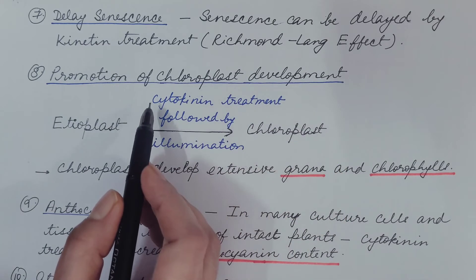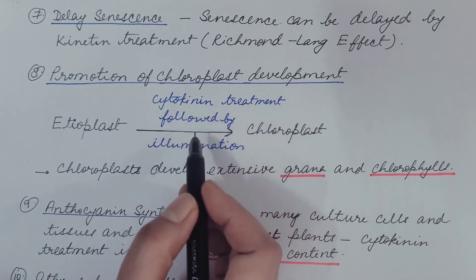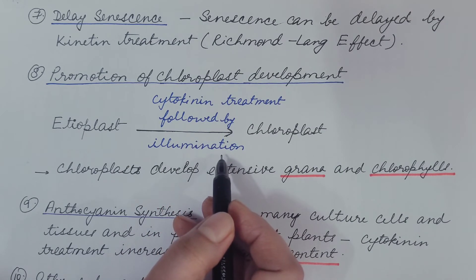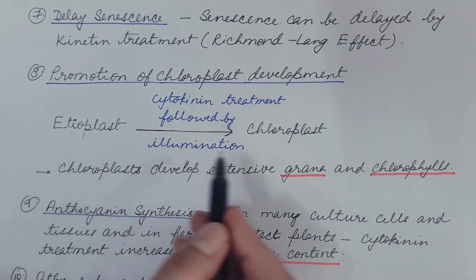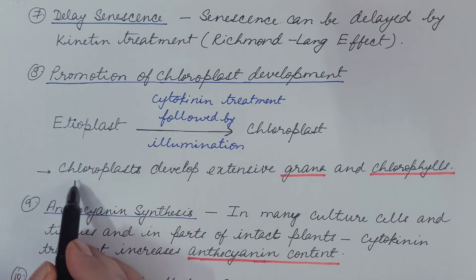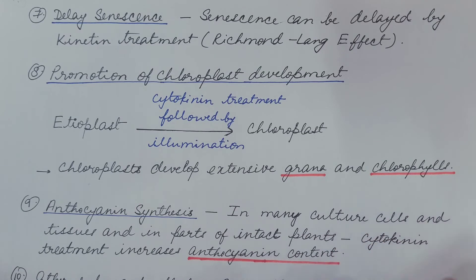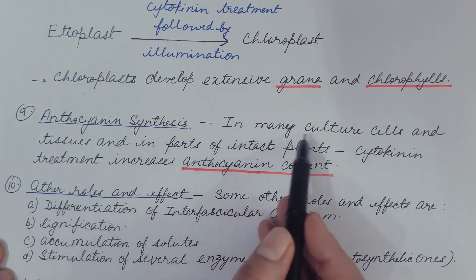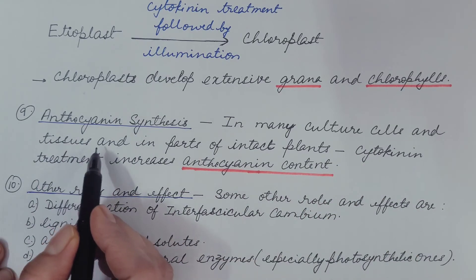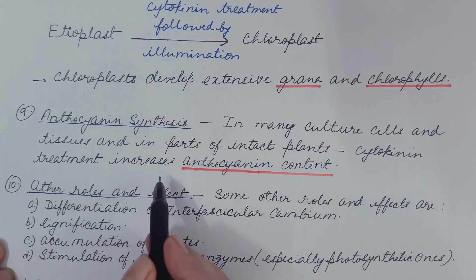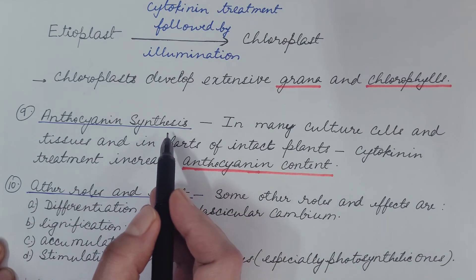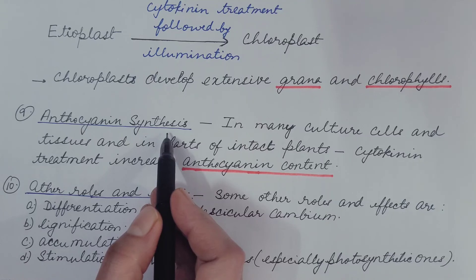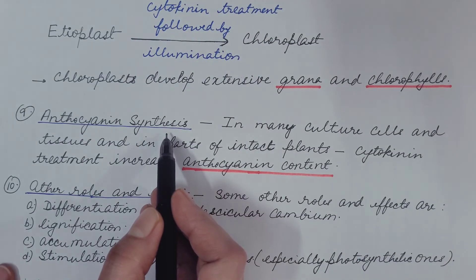Eighth is promotion of chloroplast development. When an etiolated seedling is treated with cytokinin and then exposed to illumination, it promotes the conversion of etioplasts to chloroplasts. Chloroplasts then develop extensive grana and chlorophylls. Ninth is anthocyanin synthesis. In many culture cells and tissues and in parts of intact plants, cytokinin treatment increases anthocyanin content because cytokinin promotes anthocyanin synthesis. Anthocyanins are flavonoid pigments responsible for red, pink, purple, and blue colors in plants.